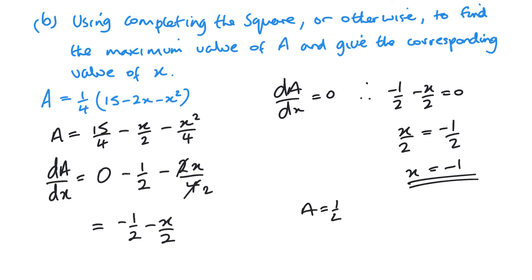And then I just substitute it into this original equation here. And it will give me the area. So 15 minus 2 times minus 1 minus minus 1 squared. So we get 15 plus 2 is 17. Minus 1 is 16. So a quarter of 16 is 4. So exactly the same as the previous answer.